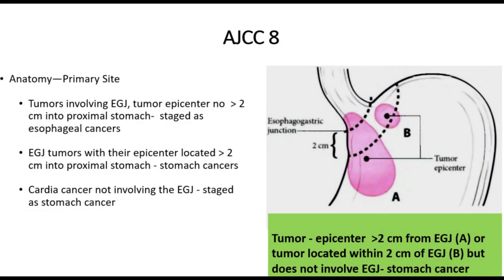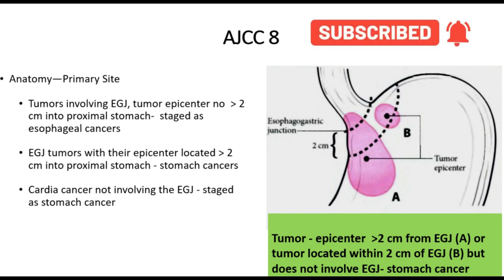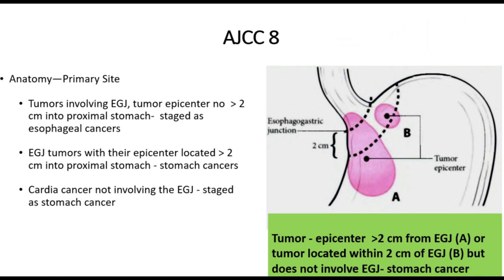Cardiac cancer not involving the oesophagogastric junction is staged as stomach cancer. If the tumor epicenter is more than 2 cm from the oesophagogastric junction, or if the tumor is located within 2 cm of the oesophagogastric junction but does not involve it, it will be labeled and managed as per the gastric cancer guidelines.